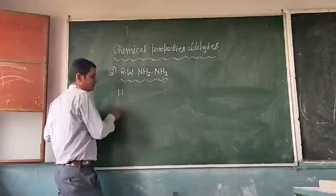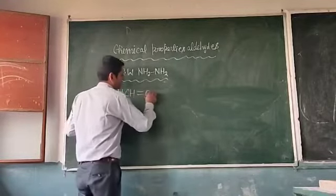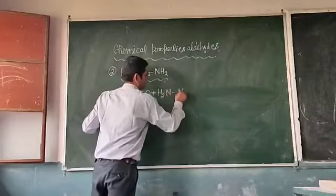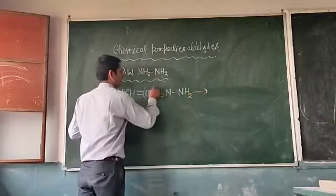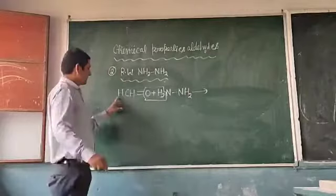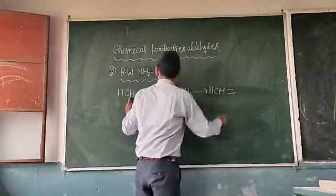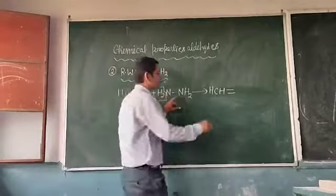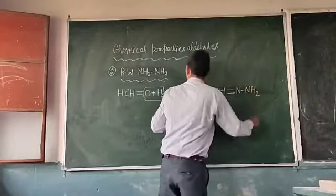Formaldehyde, HCH double point NOH, react with hydrazine to form, to form CH2NO compound, to form CH2O HCH double point NH HCH double point NOH to form formaldehyde.